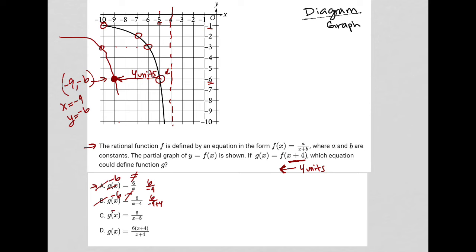Choice C does negative... and again, I'm just replacing, right? Because y equals g, y equals negative six. It's the same as saying g(x) equals negative six. g(x) and y are the same thing, y equals g(x).